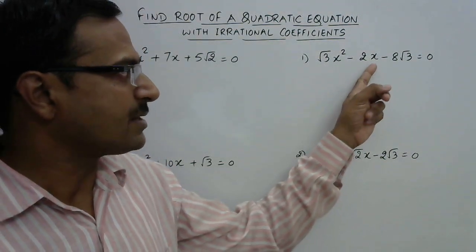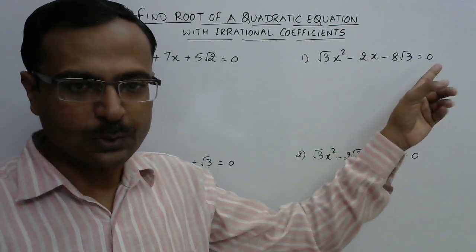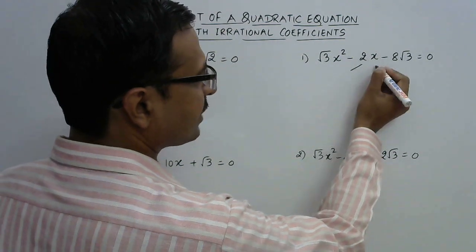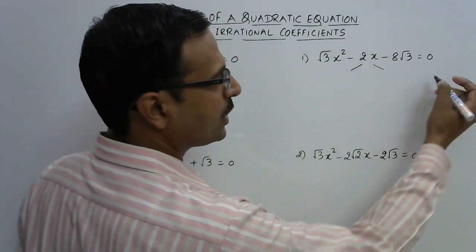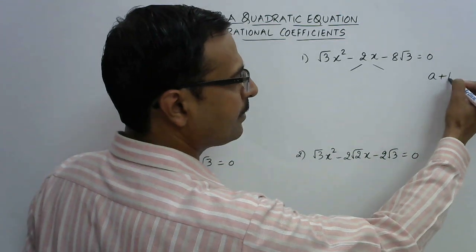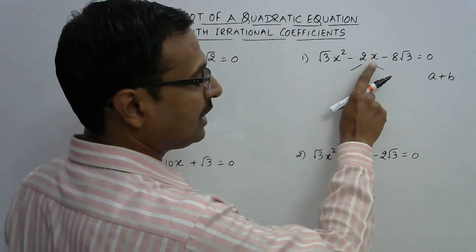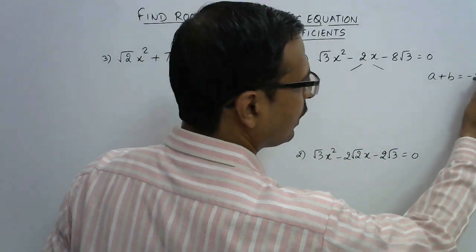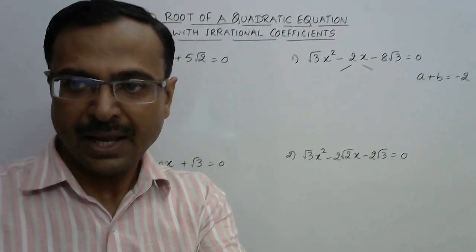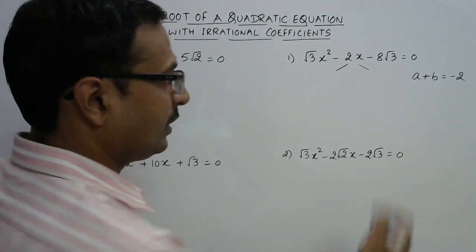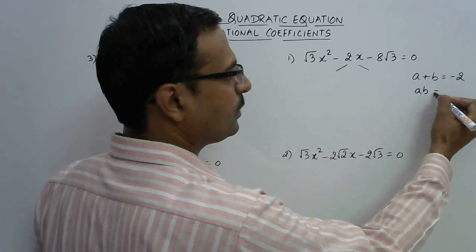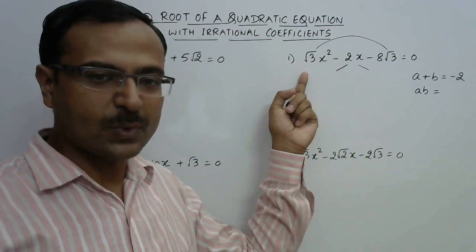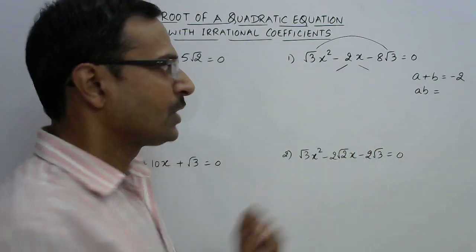We need to split the middle term into two factors. Those two factors should have a sum equal to the coefficient of x, that is minus 2, so a + b should equal minus 2. The product of those two factors, a·b, should equal the product of the coefficient of x² and the constant term, which is minus 8 into 3, giving us minus 24.